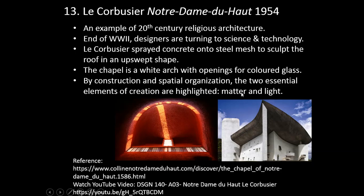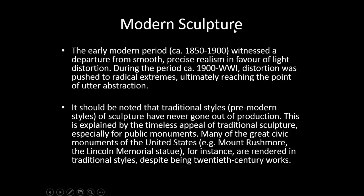Modern sculpture: the early modern period, circa 1850 to 1900, witnessed a departure from smooth, precise realism in favor of light distortion. During circa 1900 to World War I, distortion was pushed to radical extremes, ultimately reaching utter abstraction. It should be noted that traditional styles of sculpture have never gone out of production, explained by the timeless appeal of traditional sculpture — especially for public monuments. Many great civic monuments of the United States, such as Mount Rushmore and the Lincoln Memorial statue, are rendered in traditional styles despite being 20th century works.